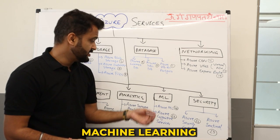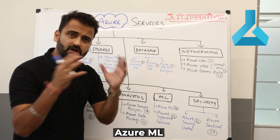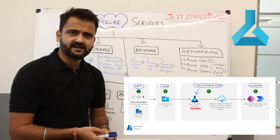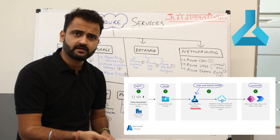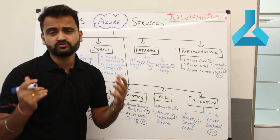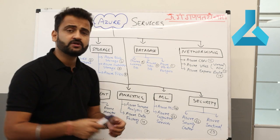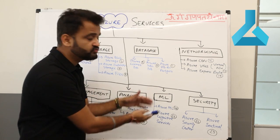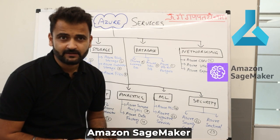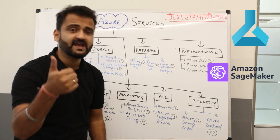Moving to the booming part of the industry — machine learning — we have Azure ML. Azure ML provides all kinds of machine learning services for collecting and training data and creating machine learning models, all in a very user-friendly manner. You don't need to be a data scientist or deploy your own models. On AWS we have SageMaker, and on Google we have Vertex AI.